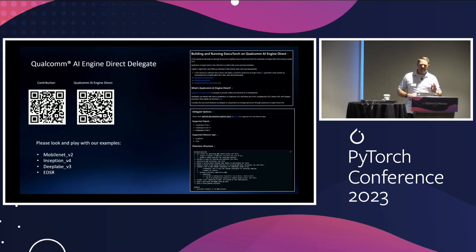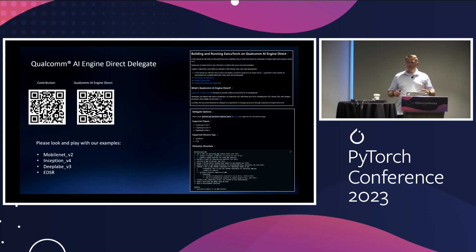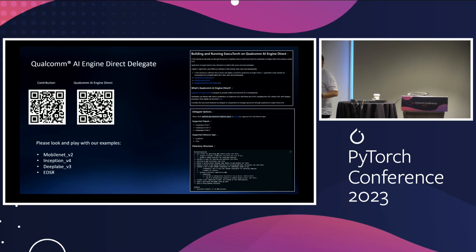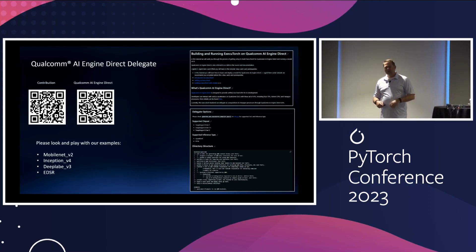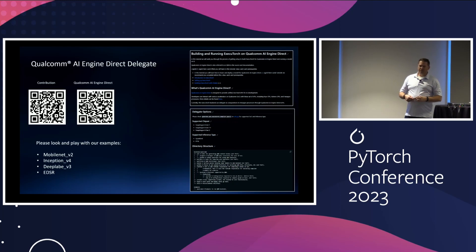We contributed all of the work to the Git repository — please go there, examples are there, our code is there. We've taken popular models that developers are kicking tires with: MobileNets, Inception, ADSR, DeepLab. We've tested and validated them. Your models will also run as long as they use the ops we tested. This is our first contribution, and we have a robust plan to add more models and push them forward before the official ExecuTorch launch next October.